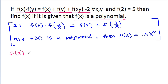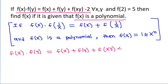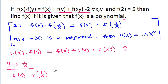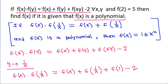We have f(x) times f(y) is equal to f(x) plus f(y) plus f(xy) minus 2, and f(x) is a polynomial. At y equal to 1/x, if we replace y with 1/x, then f(x) times f(1/x) is equal to f(x) plus f(1/x), but there is an extra minus 2 term.